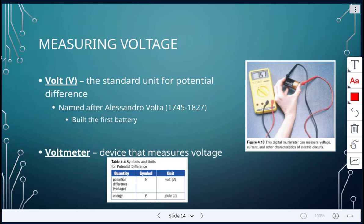So the unit for voltage is the volt, capital V. And it's the standard unit for potential difference. Named after Alessandro Volta. He built the first battery. And just like we saw the galvanometer and we saw the ammeter, there is a voltmeter. And this device would measure voltage.